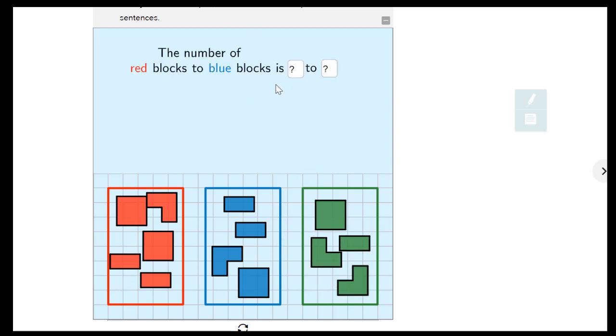And now some questions. So it says, the number of red blocks to blue blocks is, and then I have to fill in the blanks. So the first thing it's asking me to find is red blocks. So I'm going to count how many red blocks. One, two, three, four, five. I'm going to put five into this first answer box here, which represents red blocks. And blue blocks, let's count them. One, two, three, four. So I'm going to put a four in this answer box to represent the blue ones.